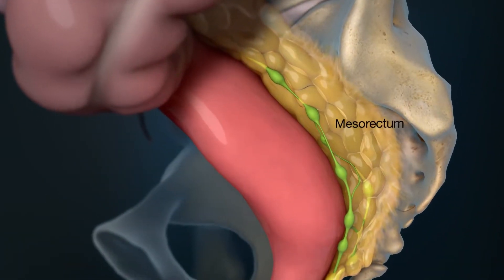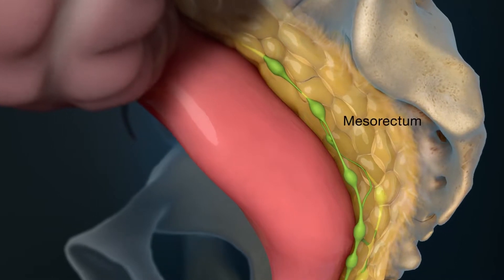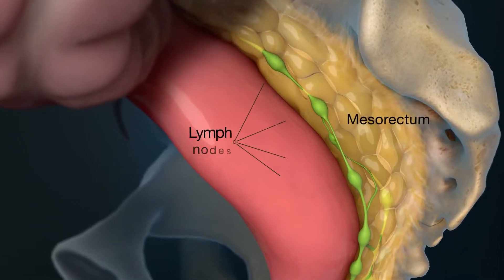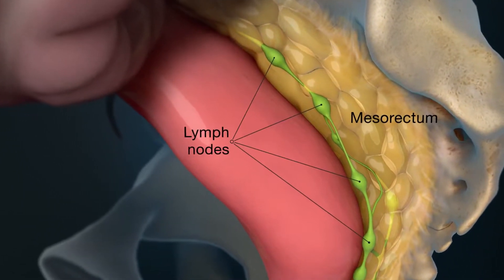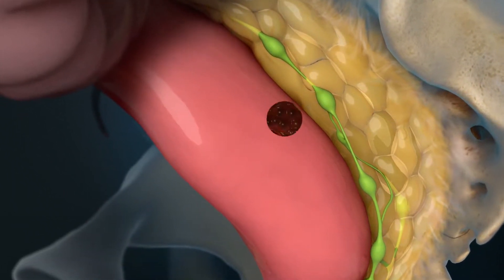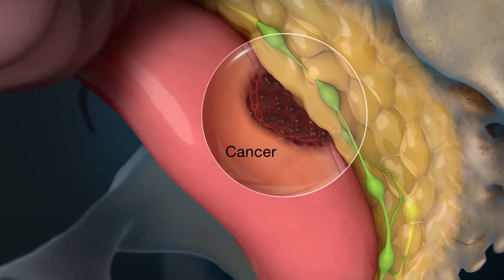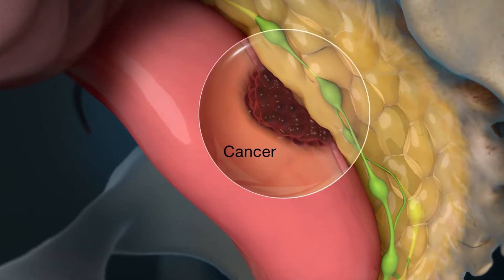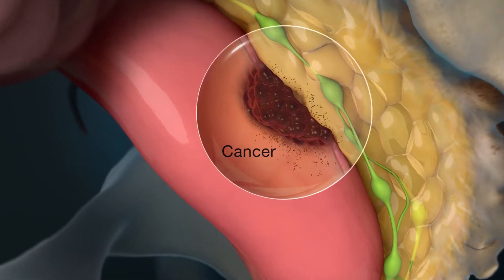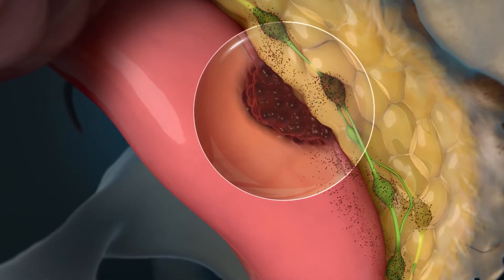The mesorectum is the tissue around your rectum that contains lymph nodes. A total mesorectal excision is performed to treat cancer in your rectum, as well as cancer that may have spread to the lymph nodes around your rectum.